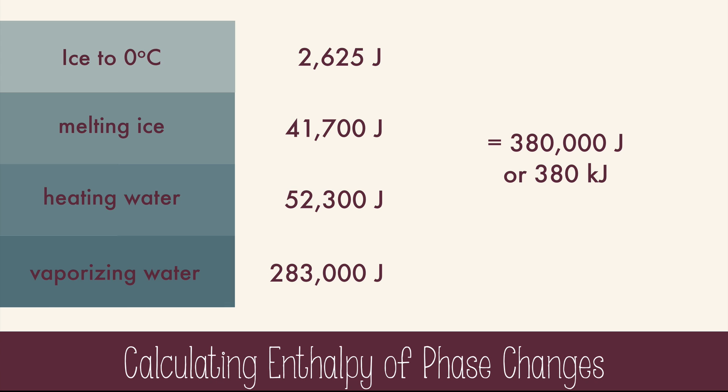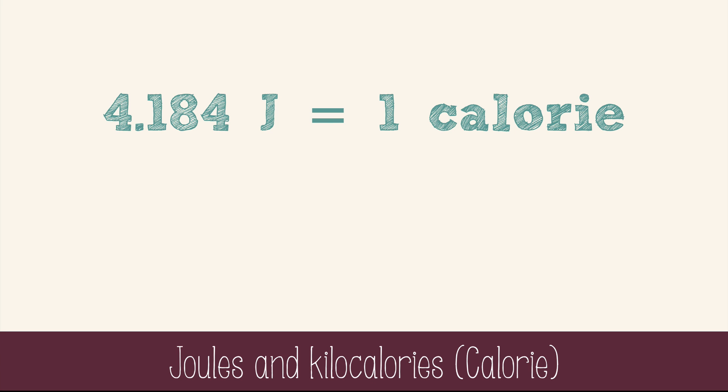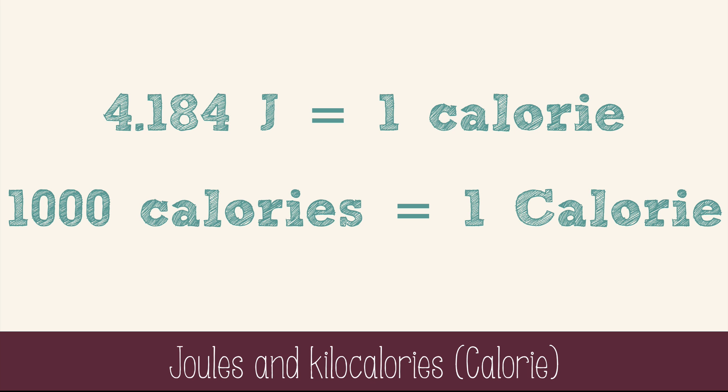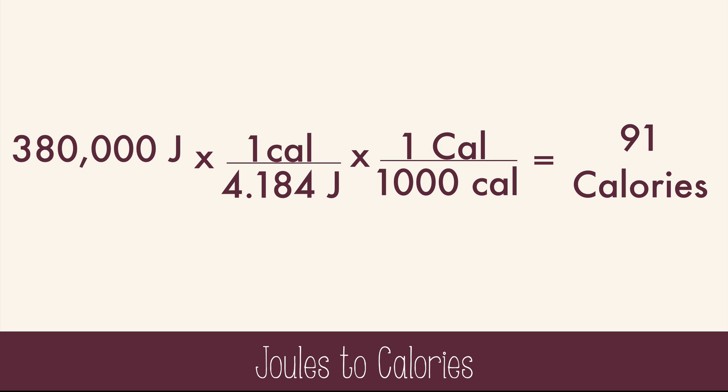But what does a number like that even mean? It's not really in familiar terms, so let's put it in terms of calories. There are 4.184 joules in a calorie. Is that number familiar? It should be. It's the specific heat of water, which makes it nice and easy to remember. But calories with a lowercase c aren't the calories that you see on the back of a food carton. Those are kilocalories, or calories with a capital C. So we'll use some dimensional analysis to see how many kilocalories it would take to turn the 125 grams of ice into vapor. We calculated 380,000 joules. So we'll convert the joules to calories, then the calories into kilocalories, and we get 91 kilocalories, which is the calories you see on the back of a food box. This is the same as about a quarter cup of guacamole.